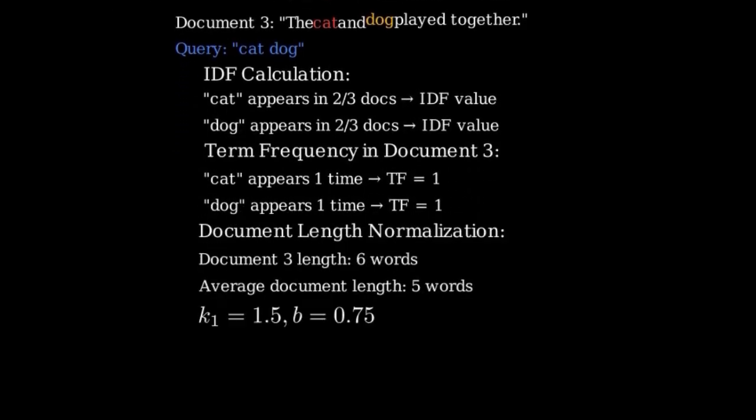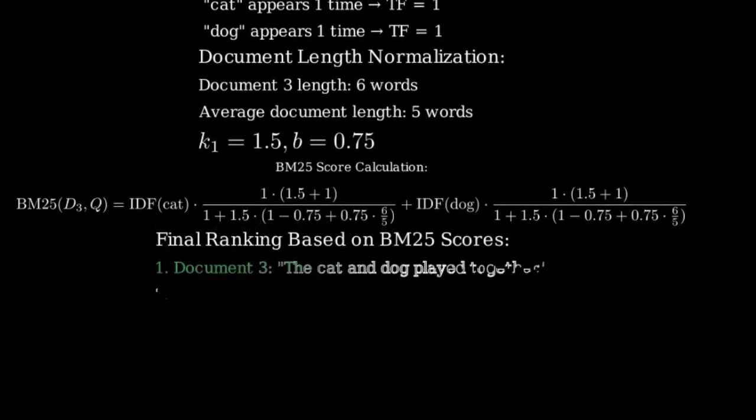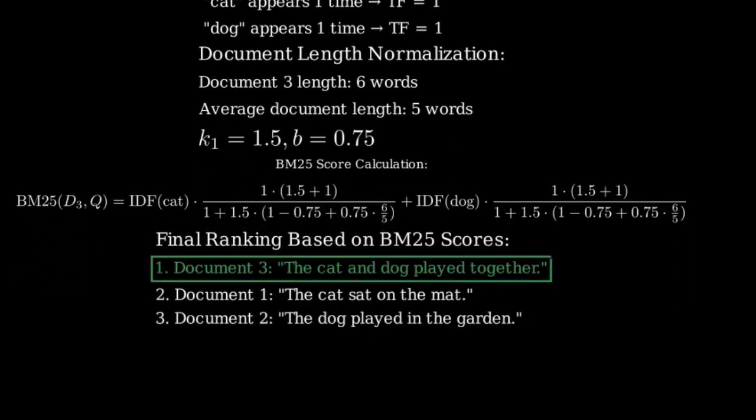For Document Length Normalization, Document 3 has 6 words, and let's say the average document length is 5. Using typical values of k_1 equals 1.5 and b equals 0.75, we can calculate the normalization factor. When we put all these components together using the BM25 formula, we get a relevance score for Document 3. We would go through the same process for Documents 1 and 2 and then rank all three documents based on their BM25 scores.